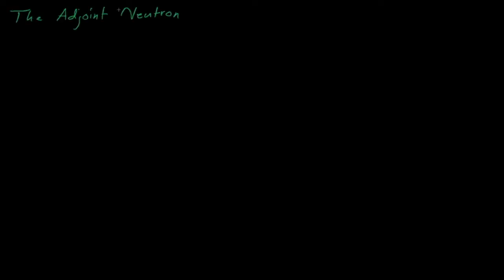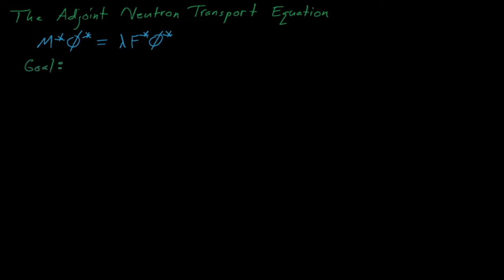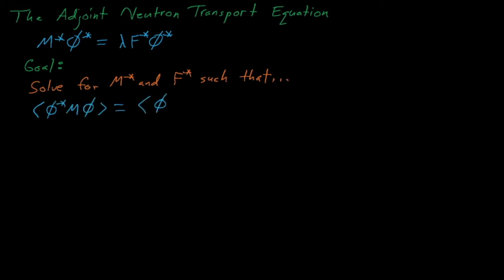Hello everyone, and welcome back to Nuclear Reactor Kinetics and Dynamics Lectures. We have begun our journey into the land of the adjoint flux, which describes the importance of neutrons relative to the eigenvalue of a system. We can obtain the adjoint flux by solving the adjoint Boltzmann transport equations, and today we will derive the adjoint loss and production operators, m-star and f-star, in these equations. Our goal in deriving these terms is to find a function that satisfies the property of adjoints, which will be necessary to derive the first-order perturbation equations later.